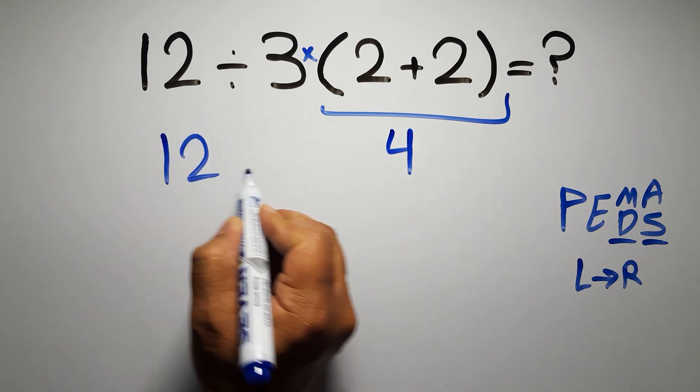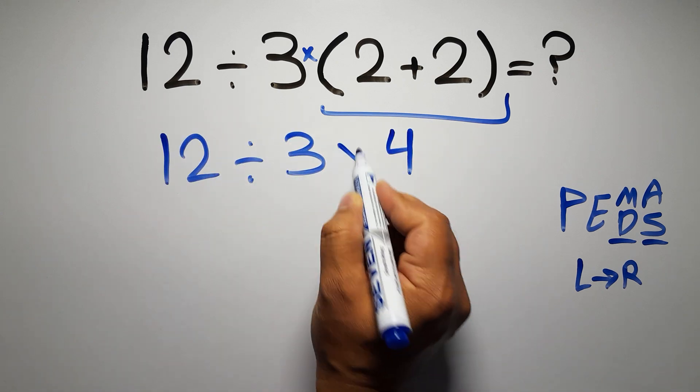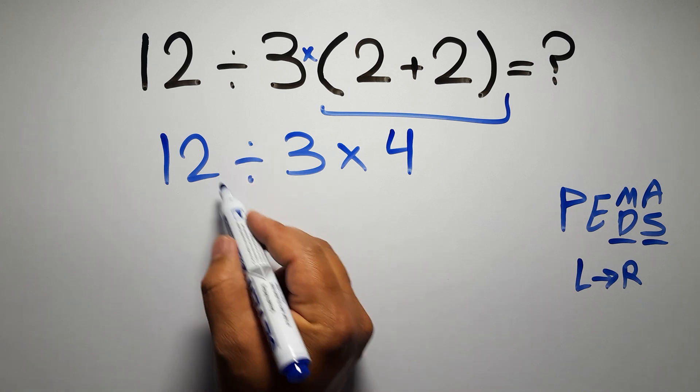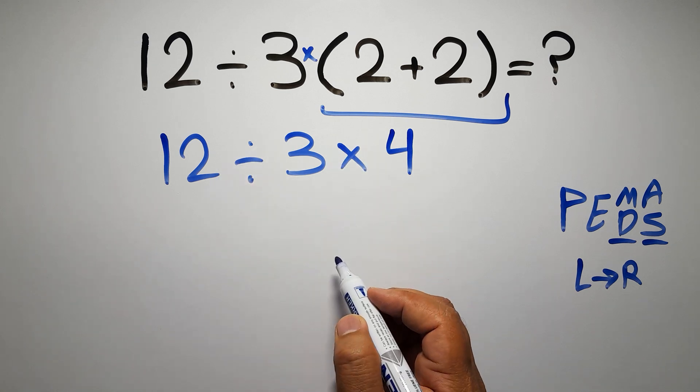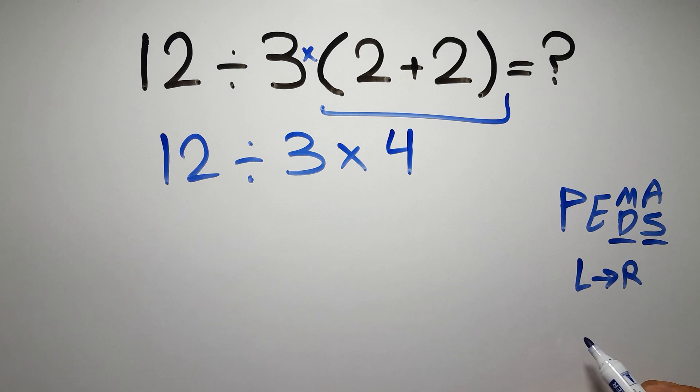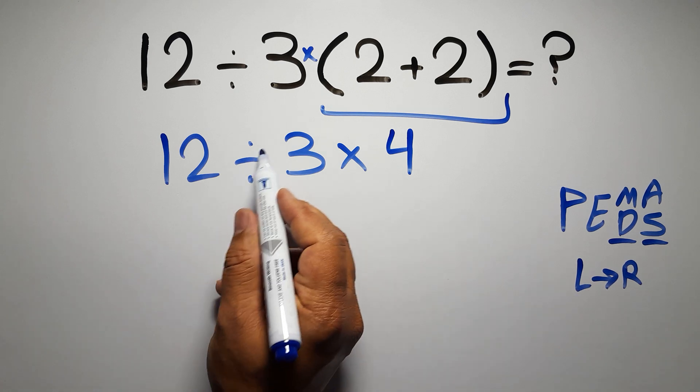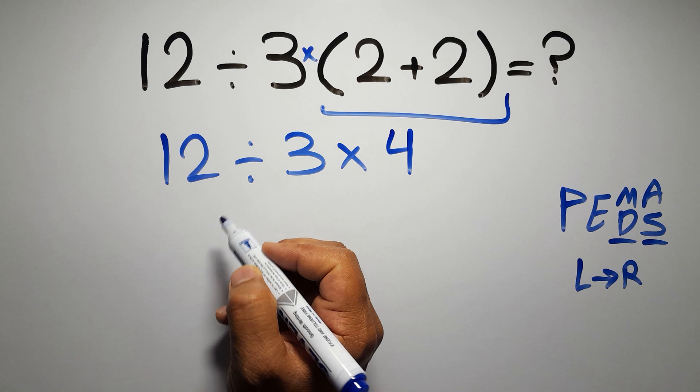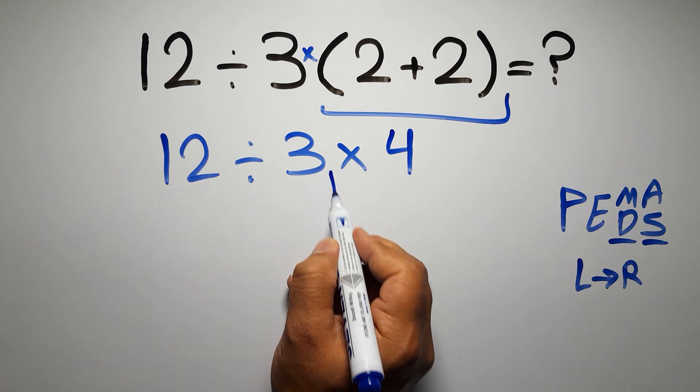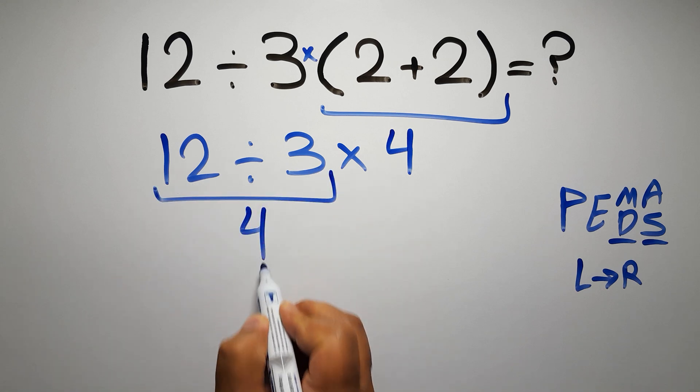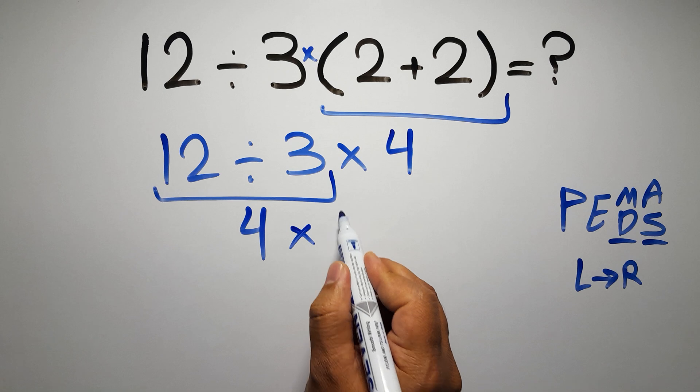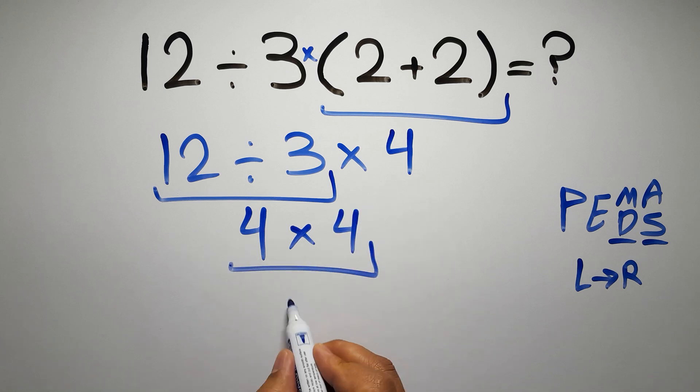So 12 divided by 3 times 4. Now we have 1 division and 1 multiplication. As I said, multiplication and division have equal priority, and we have to work from left to right. So first we do this division: 12 divided by 3 gives us 4. So 4 times 4, which equals 16, and this is our final answer to this problem.